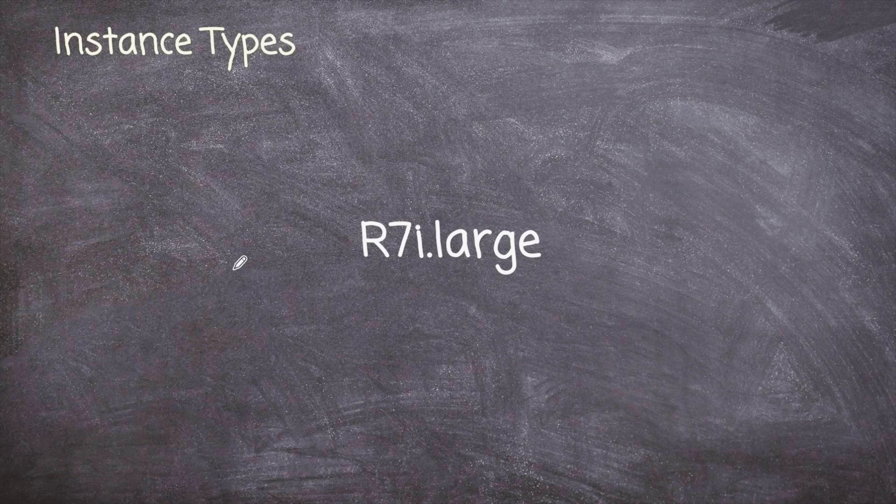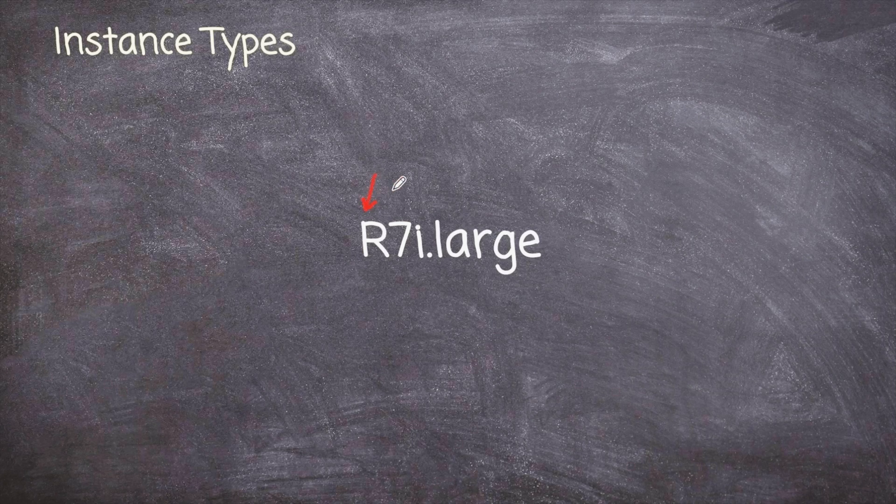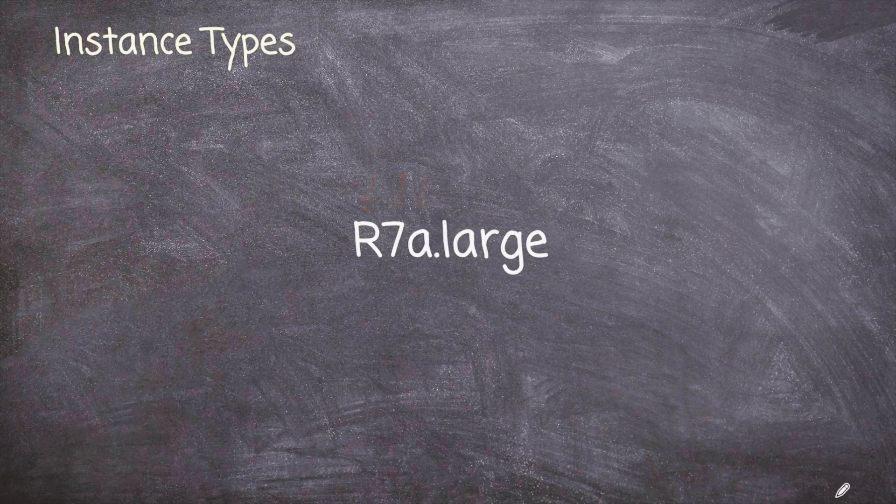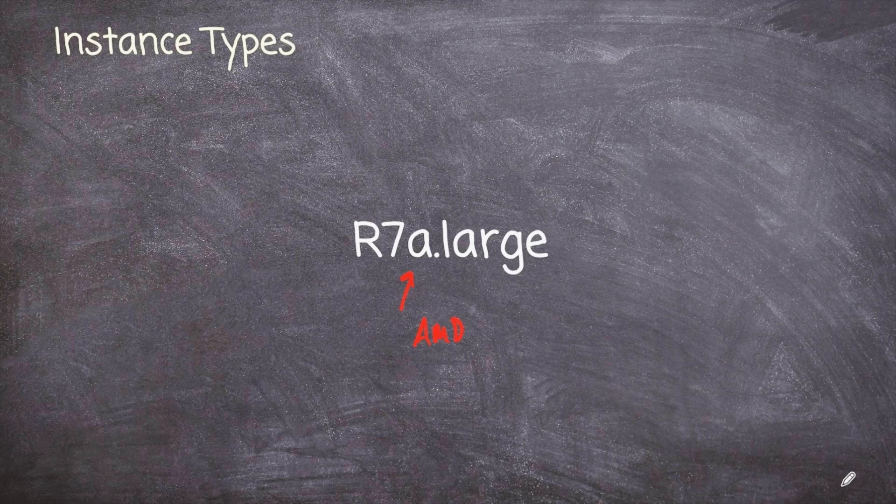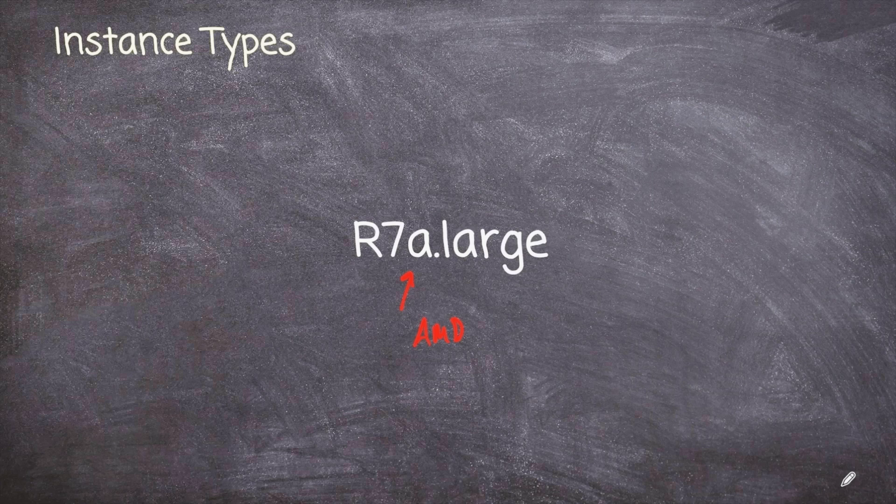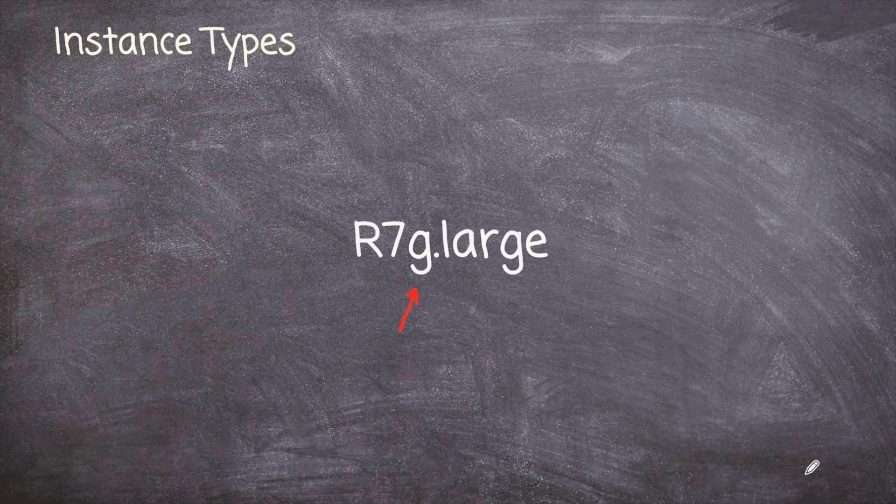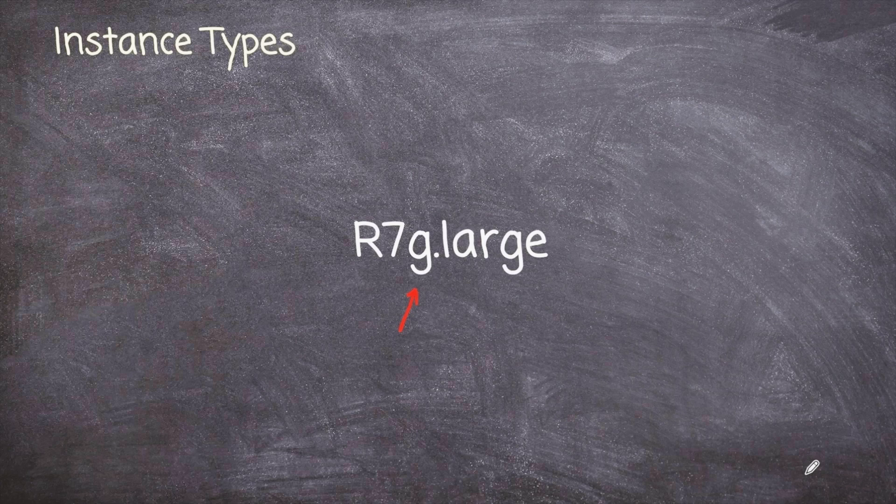So let's look at some other naming here. We have R. Again, that tells me that this is a memory optimized instance type. We have the seventh generation, and this is running on an Intel processor. Now we have R7A. This A tells me that is an AMD processor. Generally speaking, instance types that run AMD processors are slightly less expensive than their Intel counterparts. Then we have R7G. Now this G tells me that it's a Graviton. Why that's important is that if I have software that can only run on the x86 instruction set, in other words, it can only run on Intel or AMD, it will not work on this Graviton system.